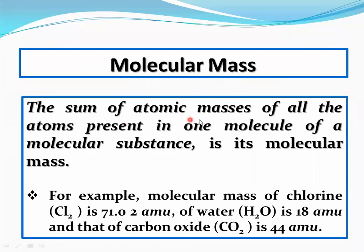Molecular mass: the sum of atomic masses of all the atoms present in one molecule of a molecular substance is its molecular mass. For example, molecular mass of chlorine Cl2 is 71. One chlorine atom has the mass 35.5 AMU. In chlorine molecule, it is present in diatomic nature, so there are two chlorine atoms in a chlorine molecule, giving a mass of 71 AMU.